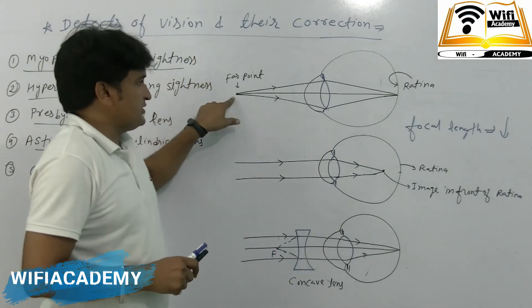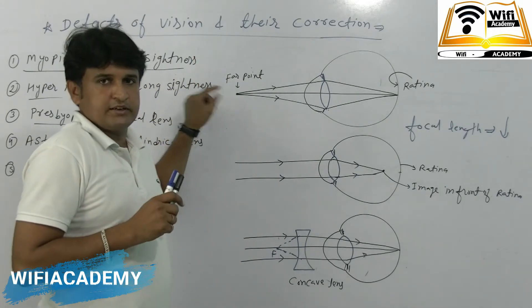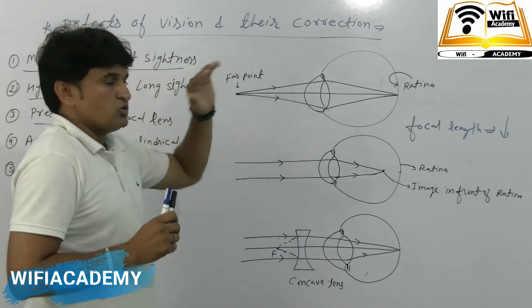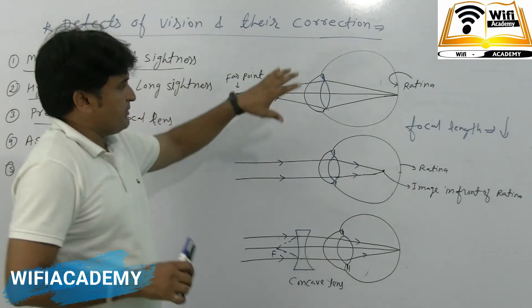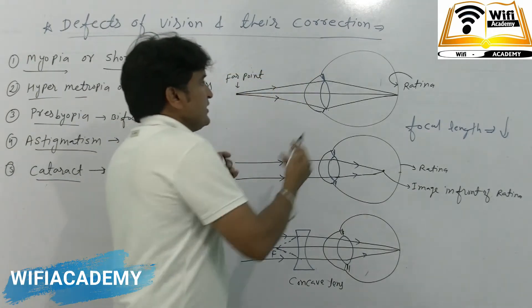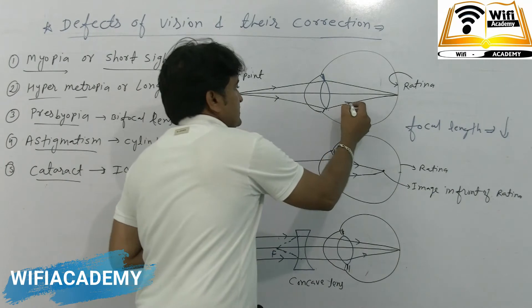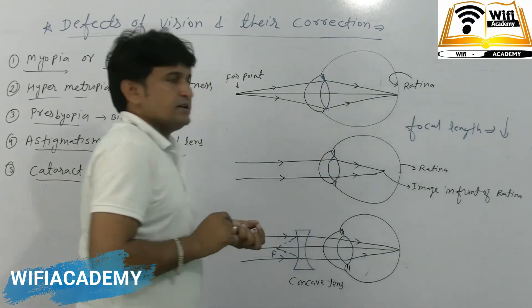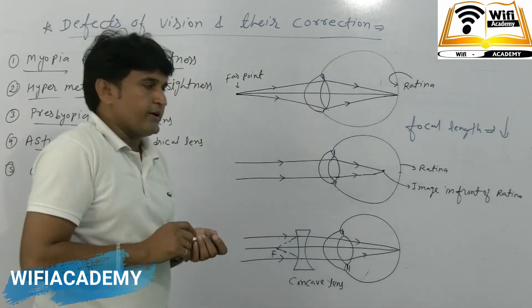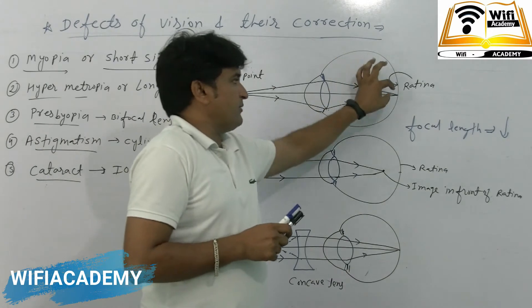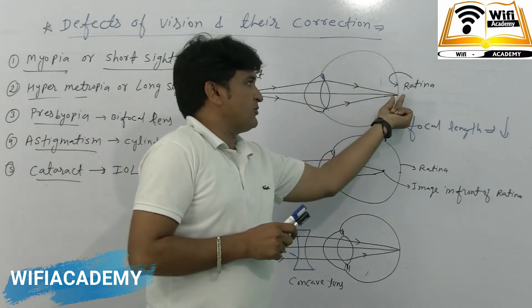The first point is that the far point of any object is reduced. In normal condition, the far point is at infinity. In normal condition, the image is formed correctly on the retina.